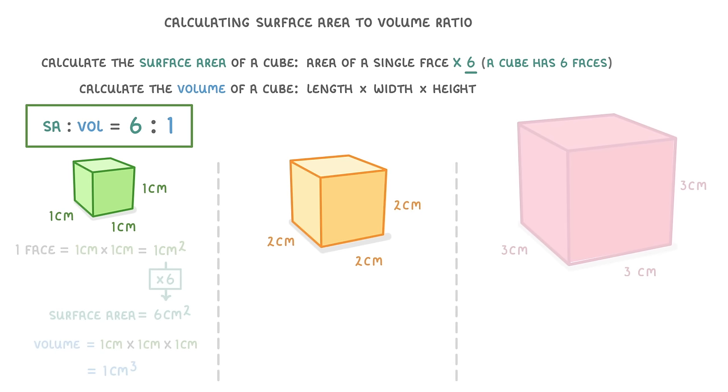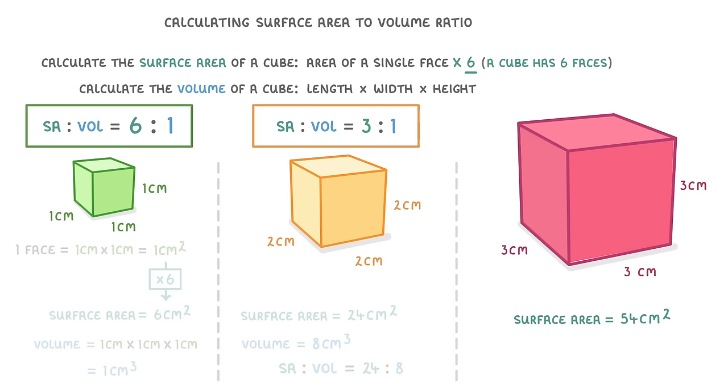If we do the same thing for this medium cube though, we get a surface area of 24 square centimeters and a volume of 8 cubic centimeters, and so a ratio of 24 to 8, which simplifies to 3 to 1. And if we do the same thing for the biggest cube, we get a surface area of 54, a volume of 27, and a ratio of 2 to 1.